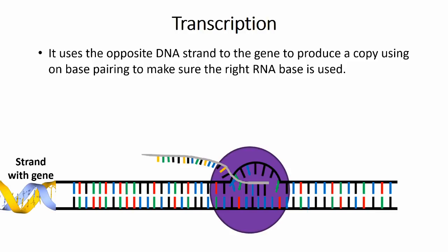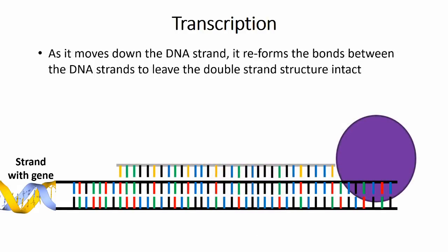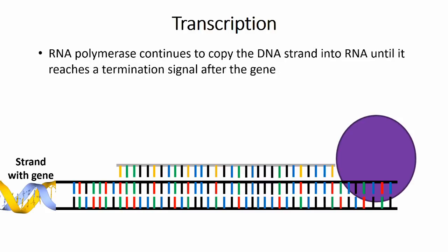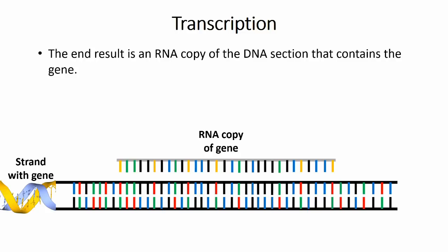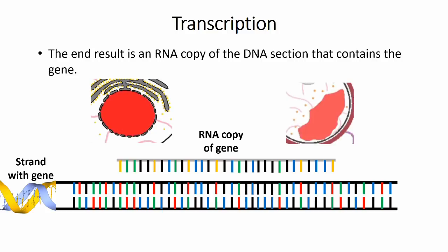As it travels past the sections that it has copied, the RNA polymerase reforms the bonds between the DNA strands, keeping the original DNA molecule intact. This process could be likened to undoing and redoing a zip in a piece of clothing. The enzyme continues to work its way down the DNA molecule until it reaches a point called the terminator, where it then stops making the RNA strand, seals the DNA back together and then leaves, leaving the end product: the RNA copy of the desired section of DNA which contains the gene. This whole process is located in the nucleus in eukaryotic cells or in the nucleoid in prokaryotic cells.